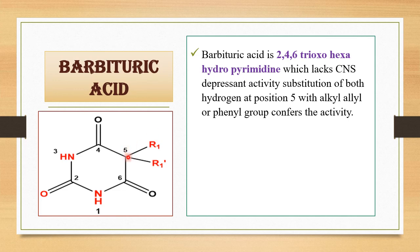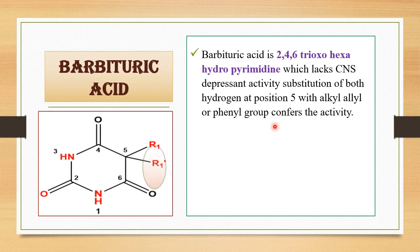In the structure of barbituric acid, the C5 position is indicated here, where R1 and R' radicals have been placed. This indicates the substitution site in barbituric acid. If this position is substituted with any alkyl side chain — either saturated or unsaturated — allyl or phenyl ring, then it will enhance the antidepressant activity.